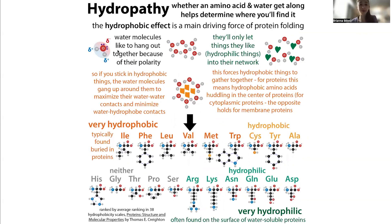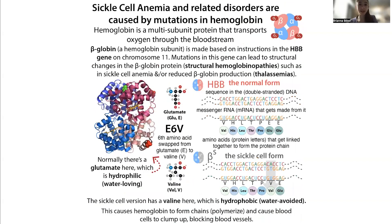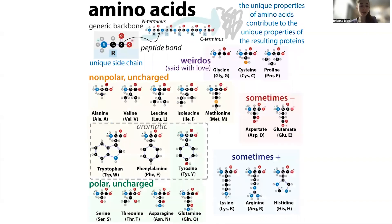They share electrons pretty fairly, so they don't give any partial charge for water to want to hang out with. And so valine is going to want to be in the center of the protein. As you see in the case of sickle cell anemia, if it gets put on the outside of a protein, you can have some serious problems. So I hope that helps you appreciate valine.